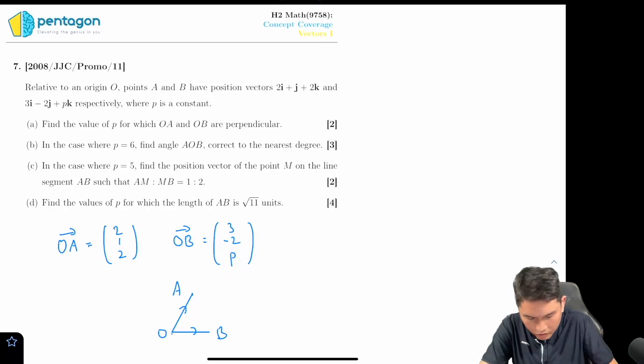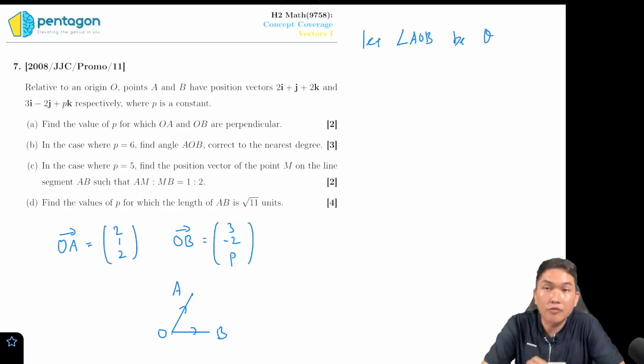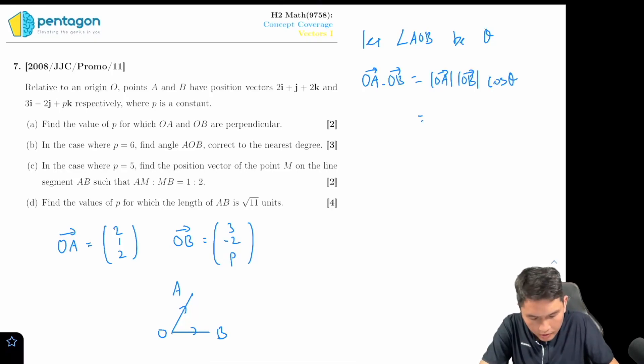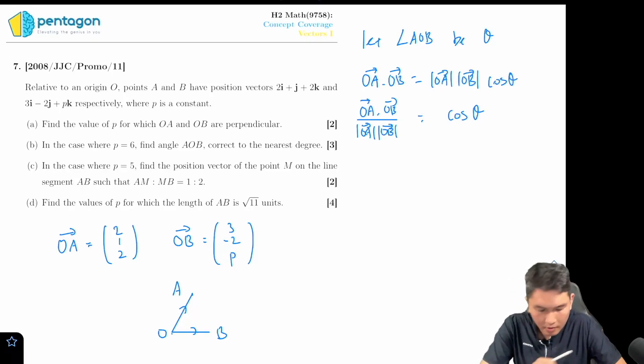First of all, I'm going to let angle AOB be theta. That would be a lot easier for me to write my working. OA dot OB, so I'm going to make cosine theta the subject of the formula. And now I just need to do cosine inverse on both sides.